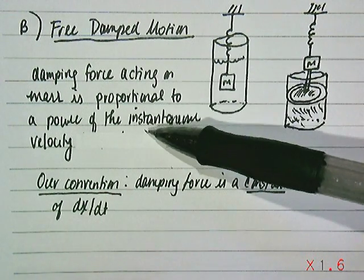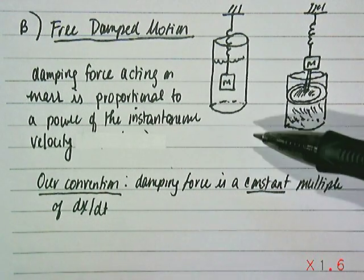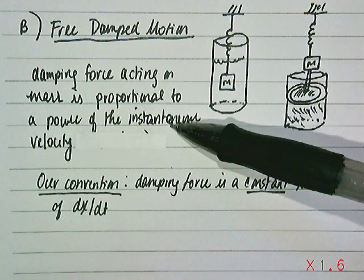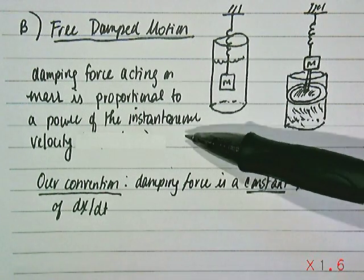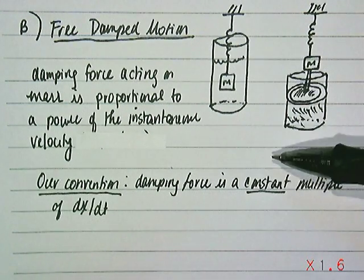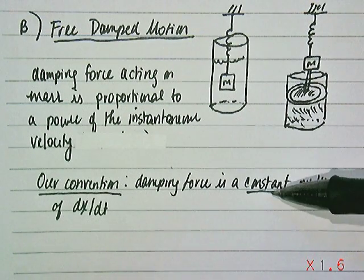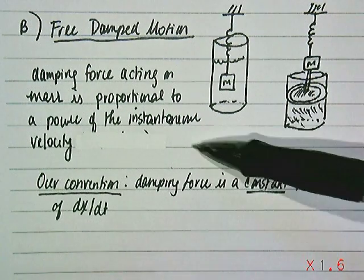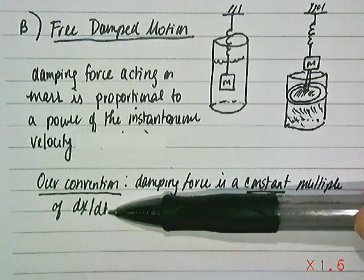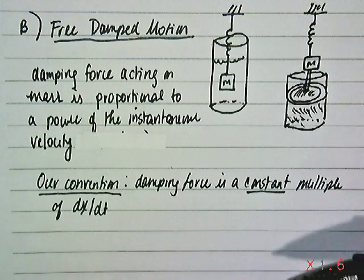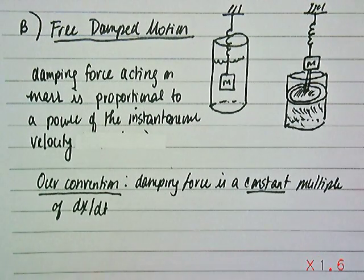In this case there is a damping force acting on the mass and the assumption in these scenarios is that it's proportional to a power of instantaneous velocity. The convention we're going to use is that the damping force on that mass attached to the spring will be a constant multiple of dx/dt, the rate of change of the displacement of the mass.